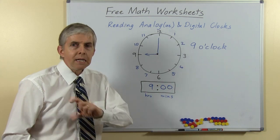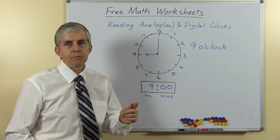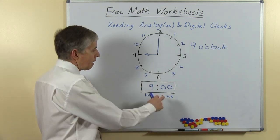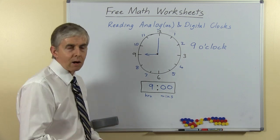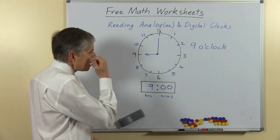The minutes will go up to 59, and after 59 the number after 59 is 60, but we never show 60. We will start again from 0 because that's the next hour. So that's how we read a time when it's o'clock.